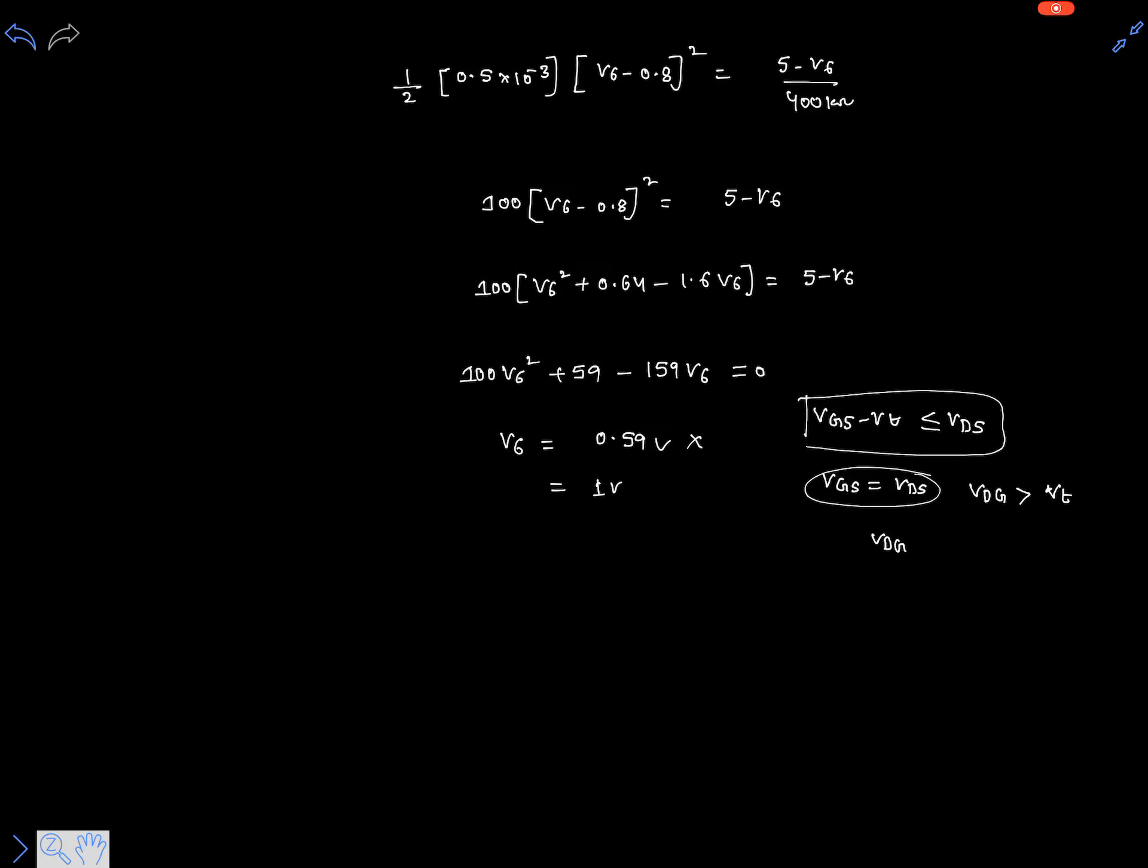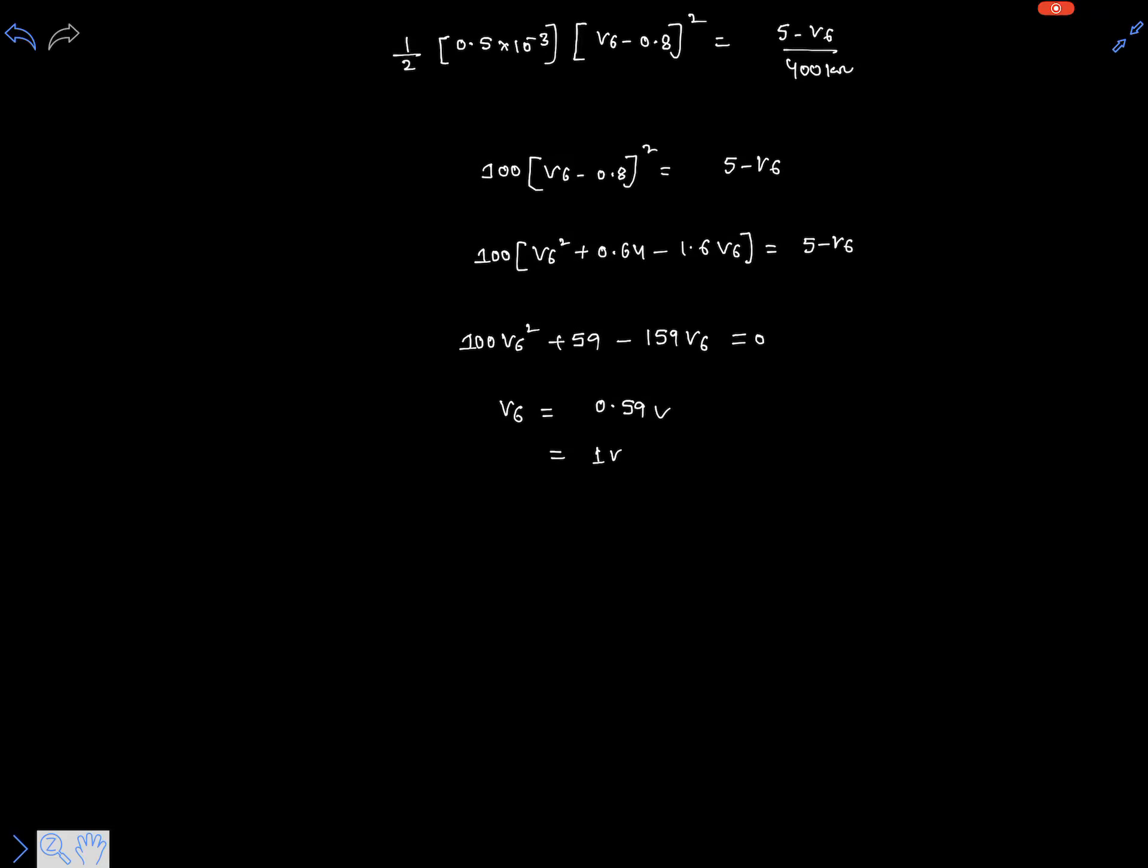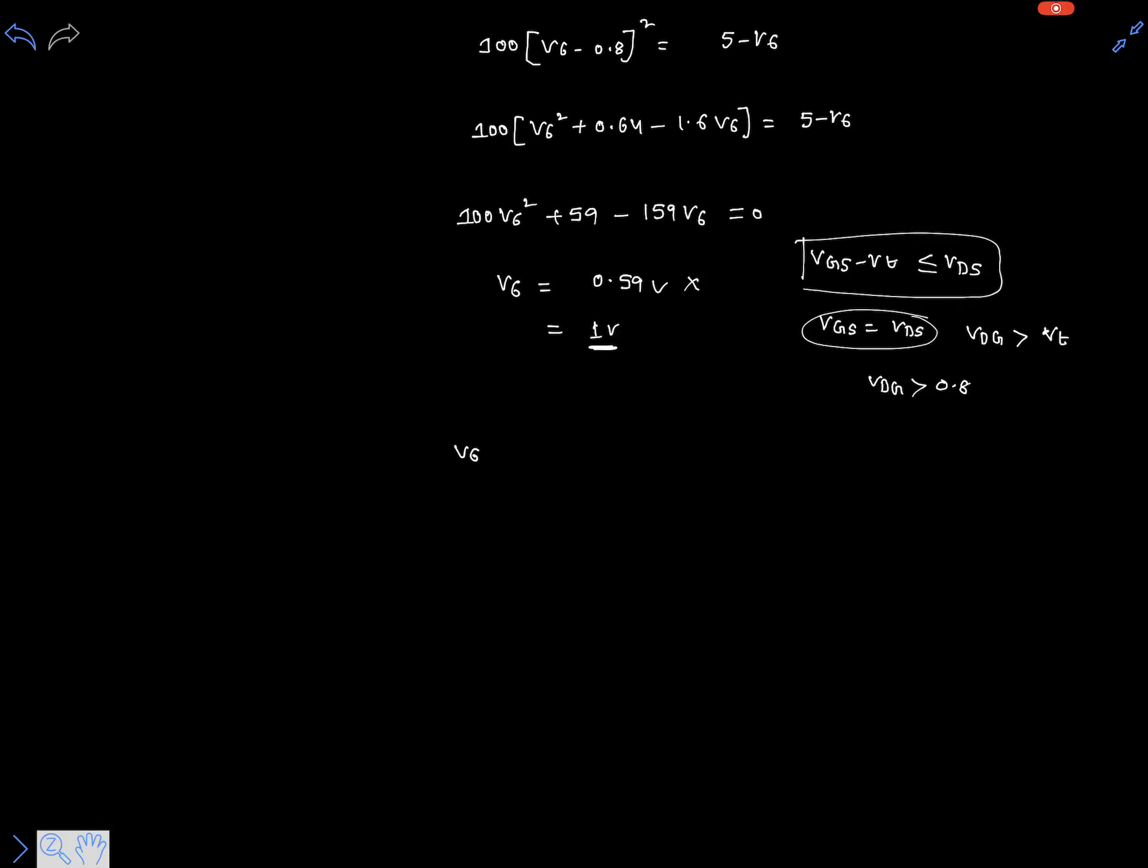VDG should be above this 0.8 volts. So only 1 volt can be the valid solution for this. So V6 is 1 volt.